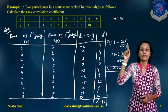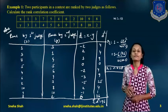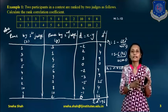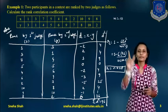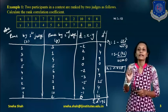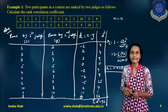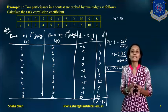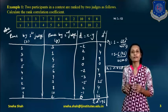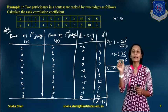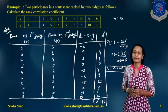To solve this example, we start with the equation R equals 1 minus 6 sigma d-squared divided by n into n-squared minus 1. First we find the value of d and n. Since there are ranks 1 to 10, n equals 10. Now we find d, which equals Rx minus Ry — that is, rank given by x minus rank given by y.